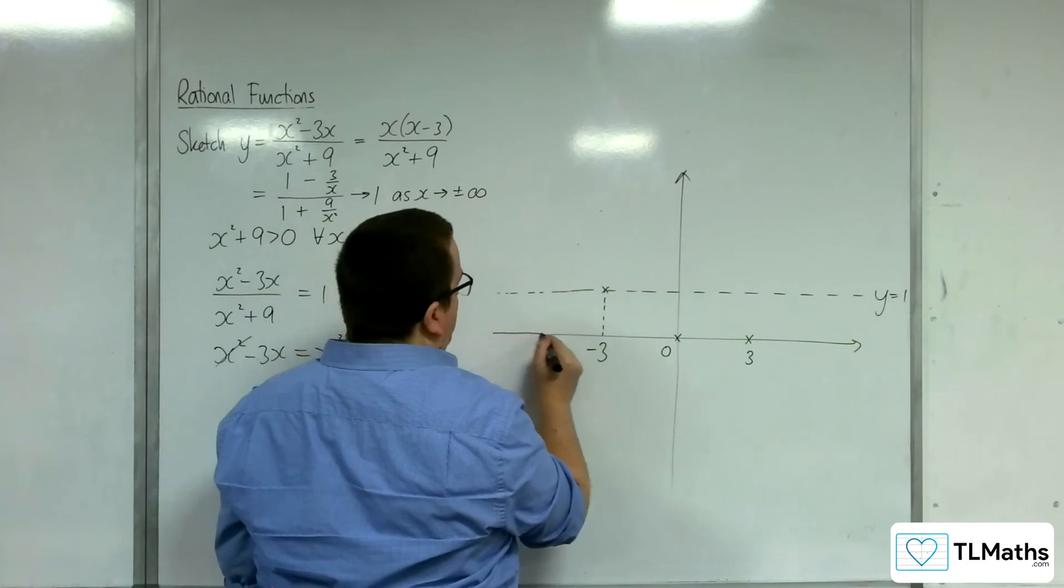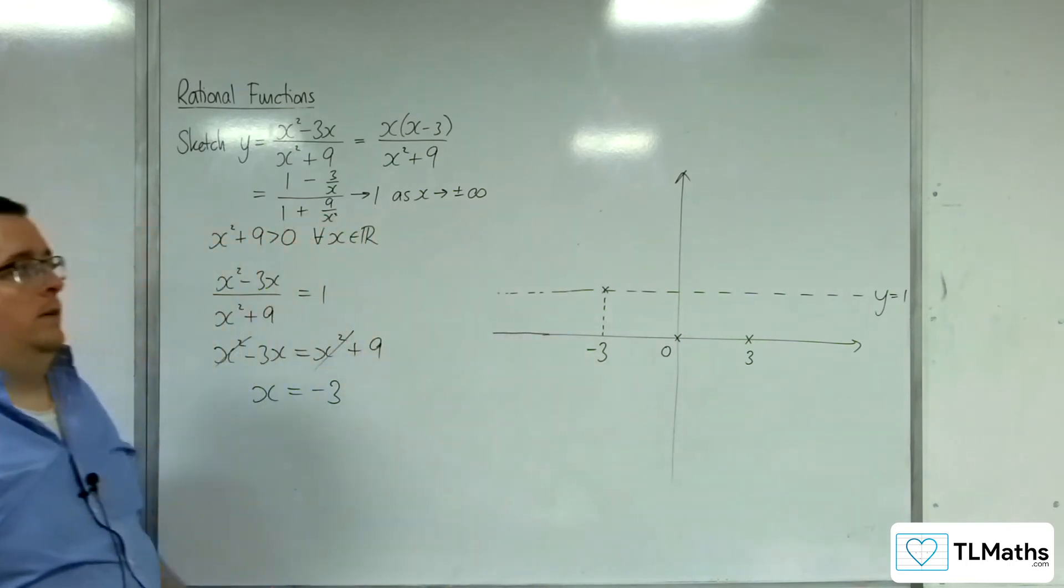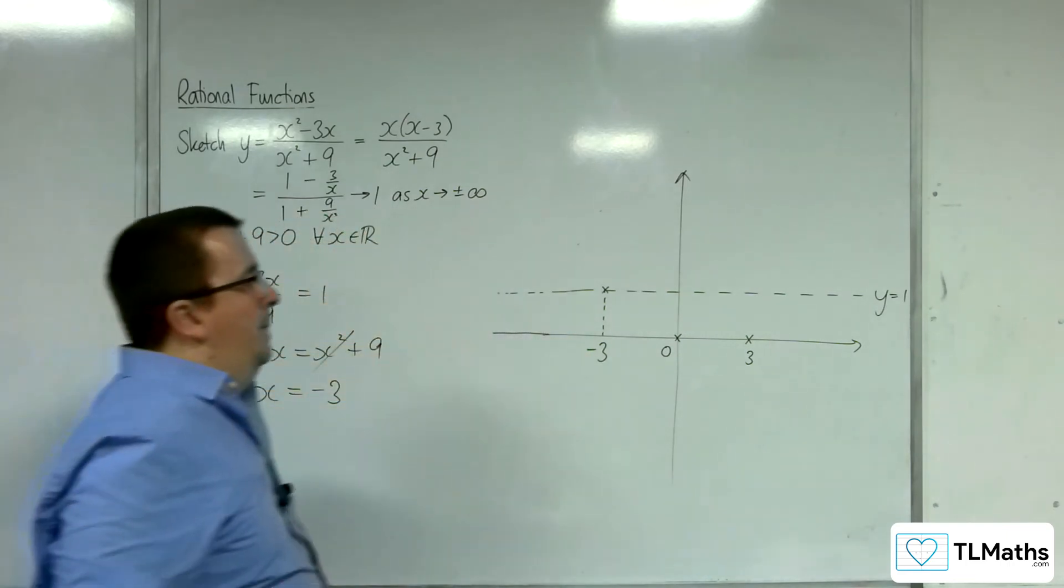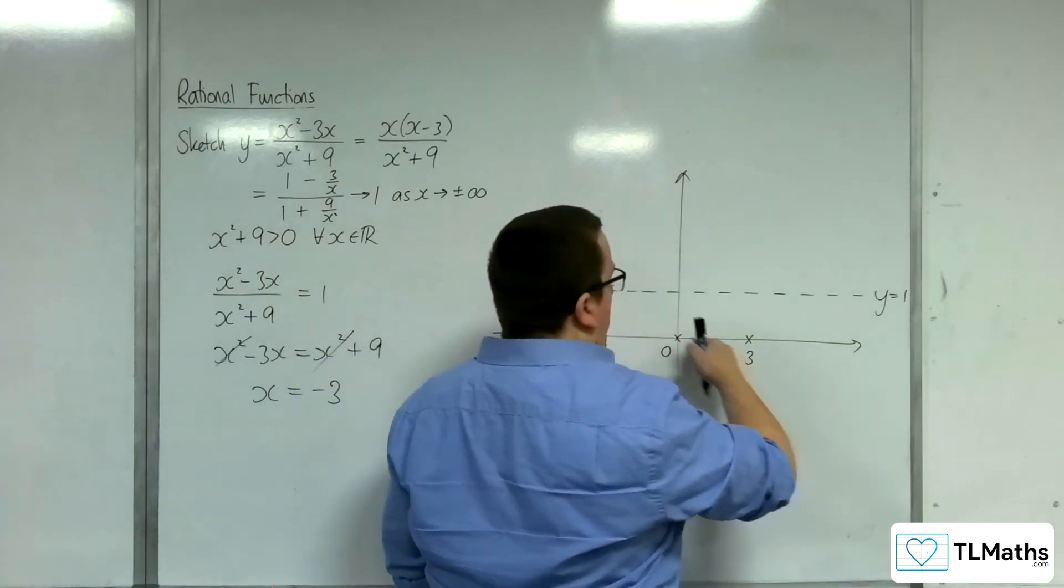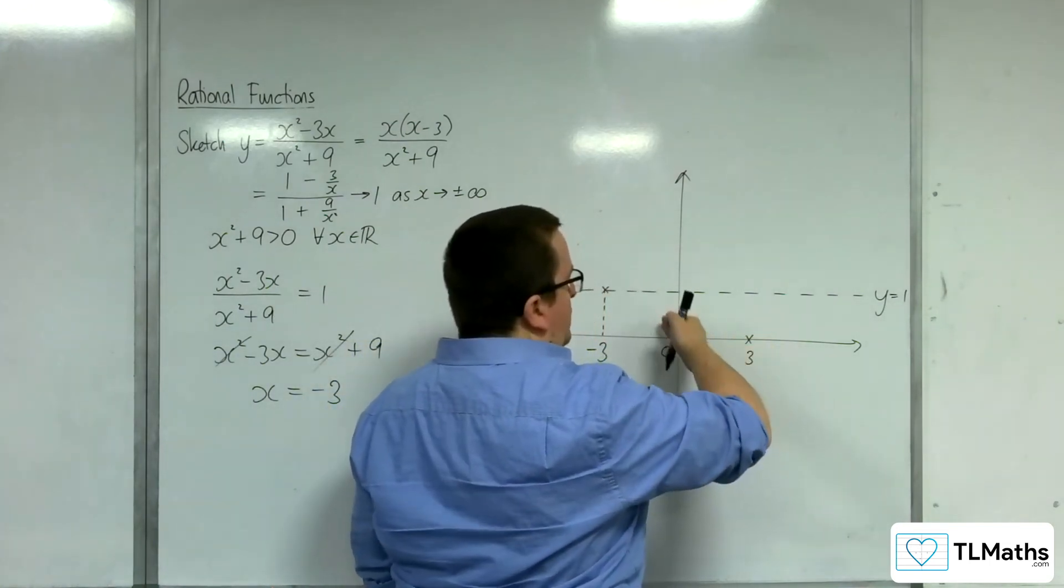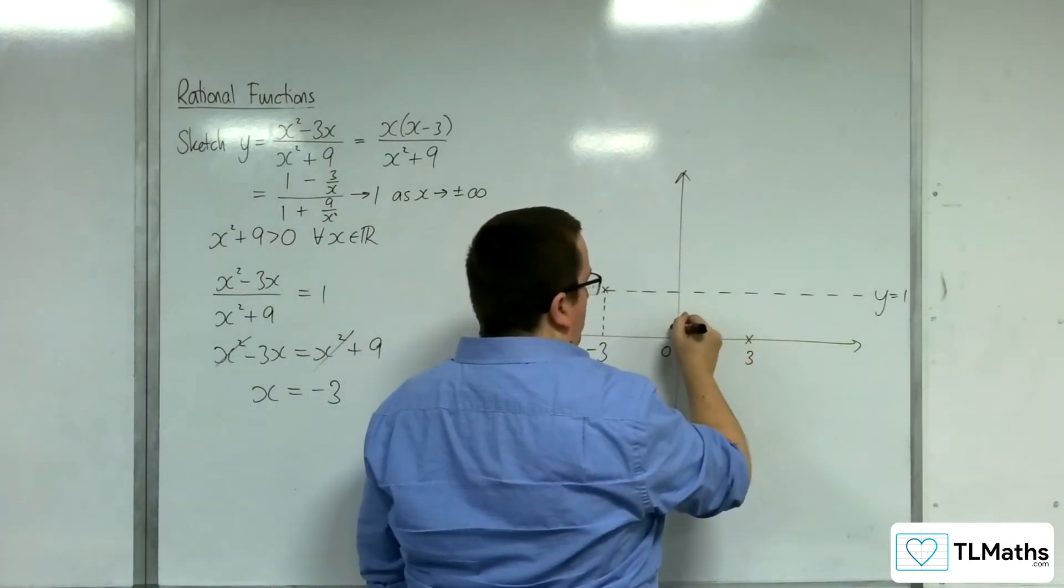Well, remember, it's got to tend towards y = 1 for both extremes. It's got to go through these two points. So it must be going through the two points like that.